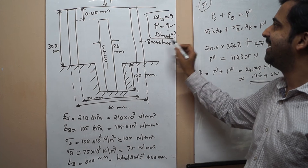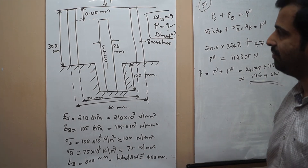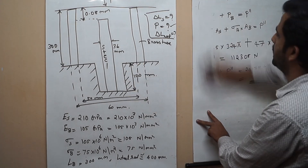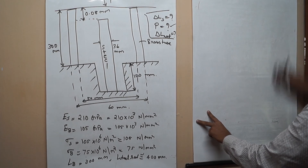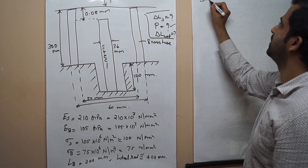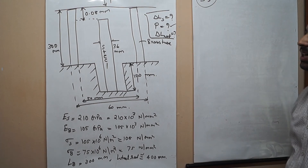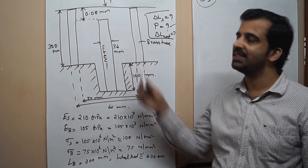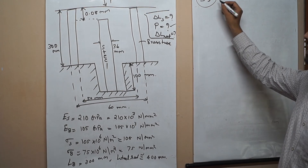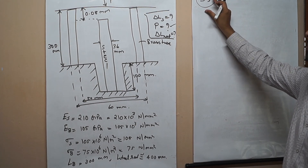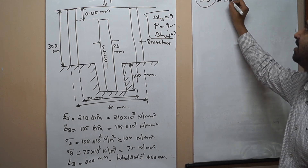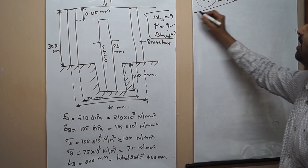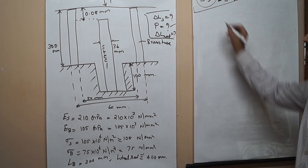Now for the second part, we need to calculate δL for the steel. We know that the compression occurring in the steel should equal the compression occurring in the brass during combined loading. Equating the stresses: σS = E_S × δL_steel / L_steel = E_brass × (net compression in brass) / L_brass.